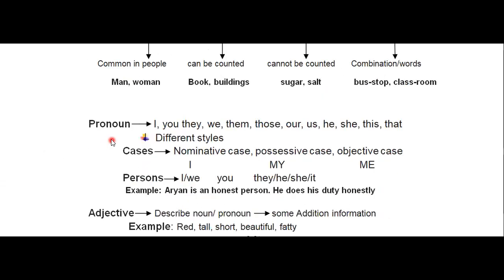Next is pronoun. Pronoun means a word used in place of a noun. In a sentence, you cannot repeat a noun again and again. For example: 'Aryan is a nice boy, Aryan is honest, Aryan plays cricket' — repeating Aryan every time is not a good expression and the paragraph won't look beautiful. So a pronoun is used in place of a noun to avoid repetition.